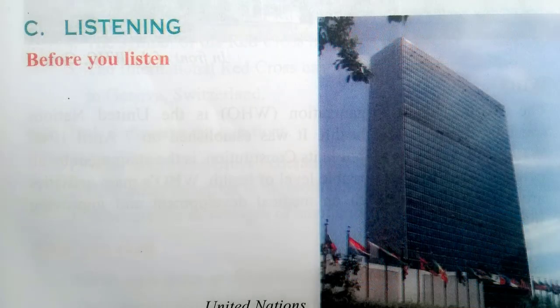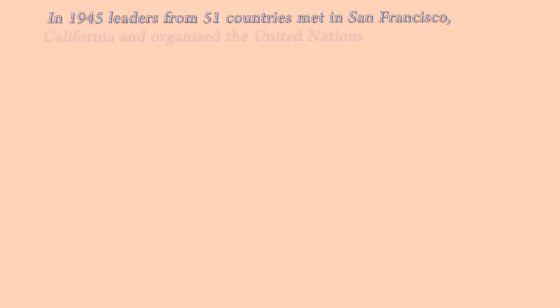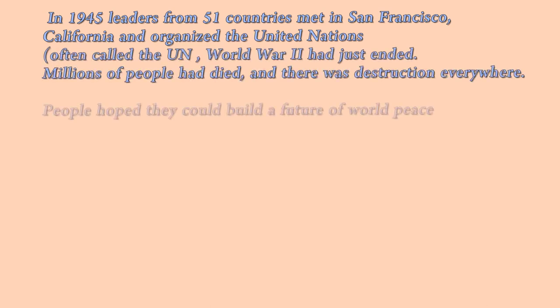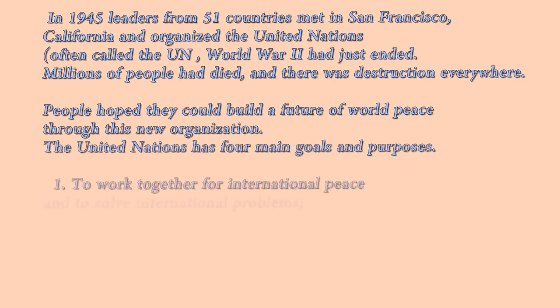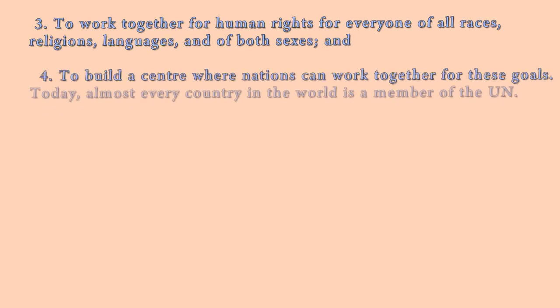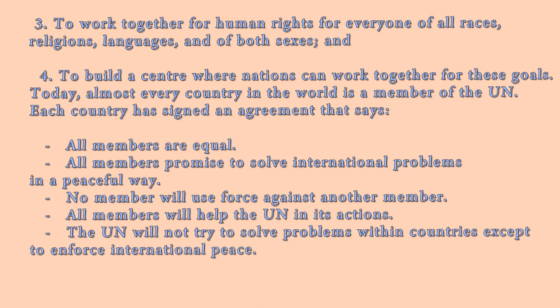Task 1. Listen to the first part of the passage and circle the best answer — A, B, C, or D — to the following questions. In 1945, leaders from 51 countries met in San Francisco, California, and organized the United Nations, often called the U.N. World War II had just ended. Millions of people had died, and there was destruction everywhere. People hoped they could build a future of world peace through this new organization. The United Nations has four main goals and purposes: 1. To work together for international peace and to solve international problems. 2. To develop friendly relations among nations. 3. To work together for human rights for everyone of all races, religions, languages, and of both sexes. 4. To build a center where nations can work together for these goals.